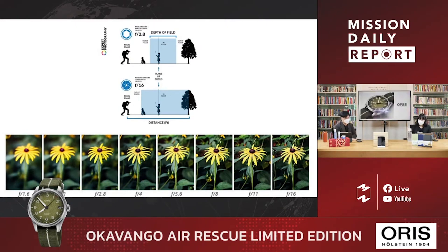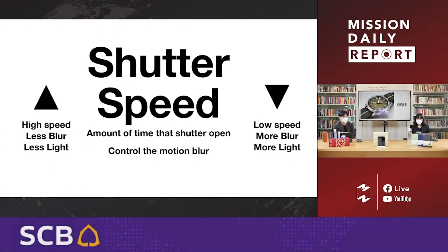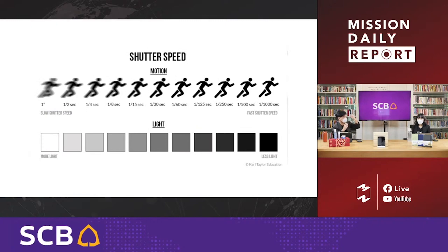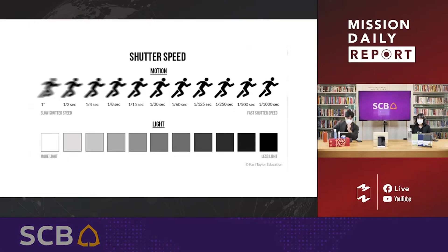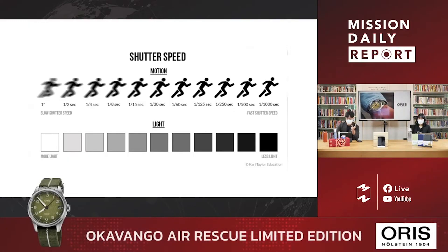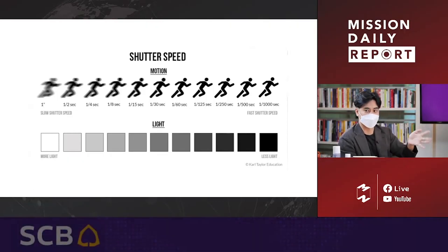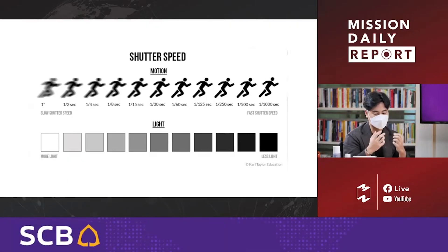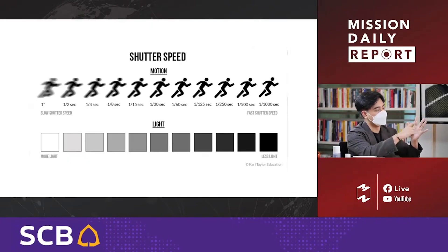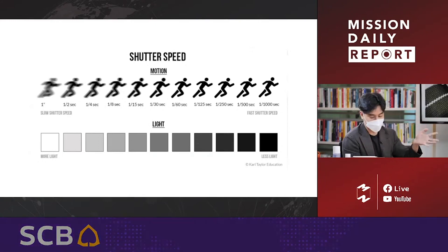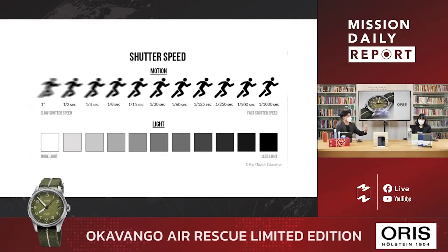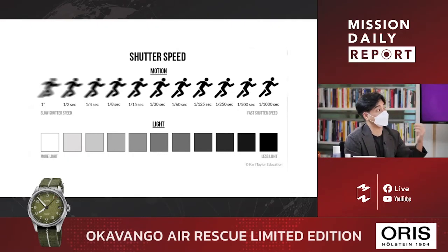Shutter speed is the speed at which the shutter opens when you press the button to take a picture. If you use a high shutter speed, the image will not be blurred. When you use shutter speed, you can adjust whether the image is sharp or blurred.